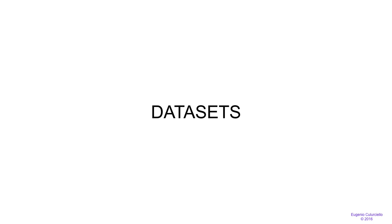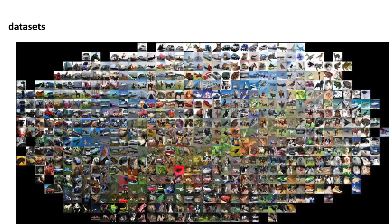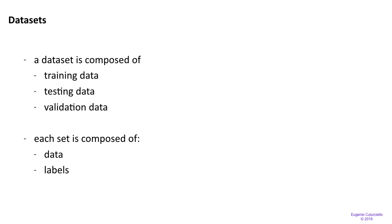Today we're going to talk a little bit about datasets. Datasets are a collection of samples and possibly labels. In our case, there will be lots of images in folders, where the folder name is the category name. A dataset is usually composed of training data, testing data, and validation data. Training and validation sets are used to create a model, while test data is used to evaluate the results of what we trained.